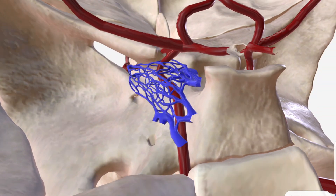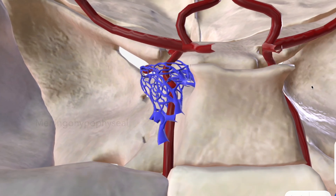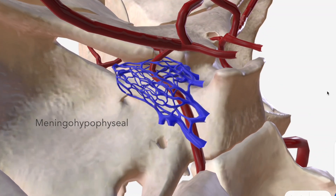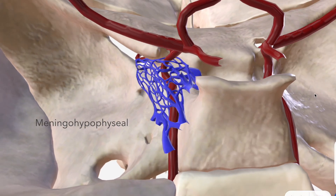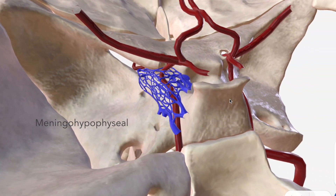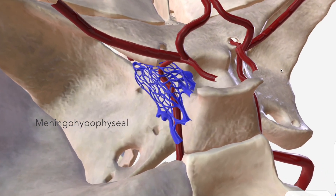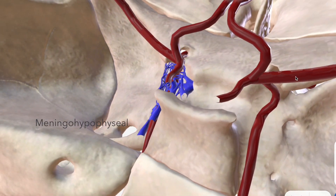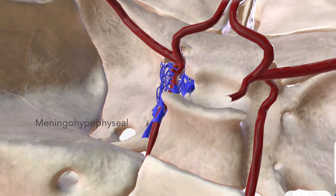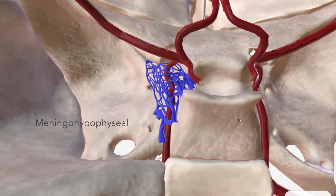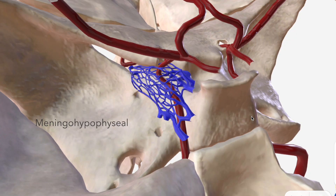There are two branches from the cavernous segment. The first is the meningohypophyseal branch, which supplies the meninges covering the clivus — this sloping segment of bone — and also the tentorium cerebelli, a flat surface of meninges separating the cerebellum from the rest of the brain. It also supplies the pituitary gland, also called the hypophysis, sitting in the sella turcica.